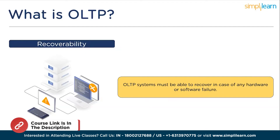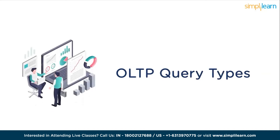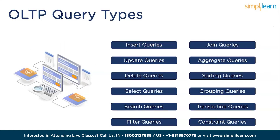Now we will understand the types of queries that an OLTP system can process. OLTP systems can perform several types of queries to handle day-to-day business operations effectively. Some of the common types of queries include insert queries, update queries, delete queries, select queries, search queries, filter queries, join queries, aggregate queries, sorting queries, group queries, transaction queries, and constraint queries. Let's understand them in a bit more detail.